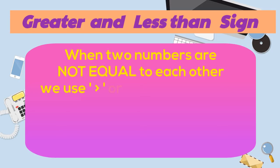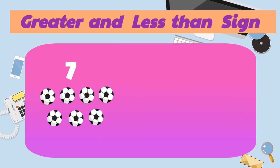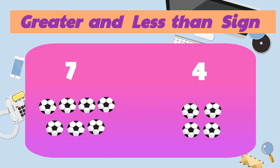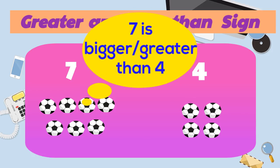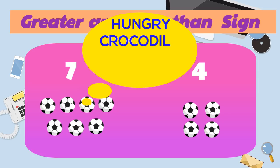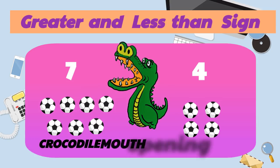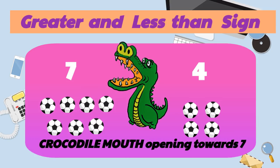But when they see two numbers that are not equal to each other, they have to use other signs. Here, seven and four are not equal, and seven is bigger or greater than four. To easily remember this, we can say that the hungry crocodile's mouth will eat the bigger number — so here the crocodile mouth opens towards seven, and this sign will come.